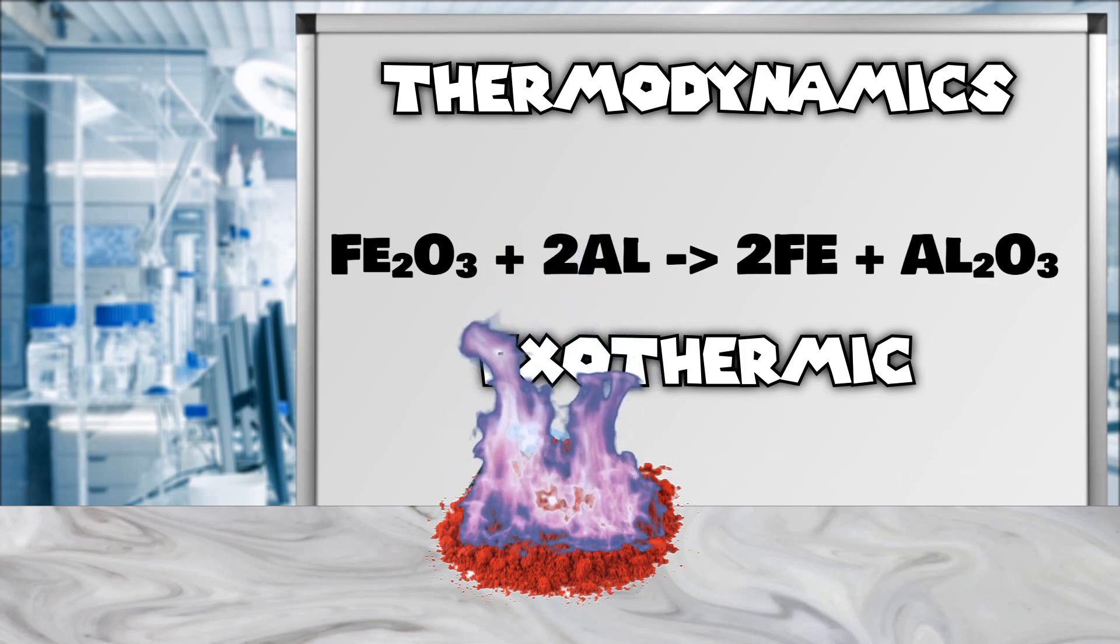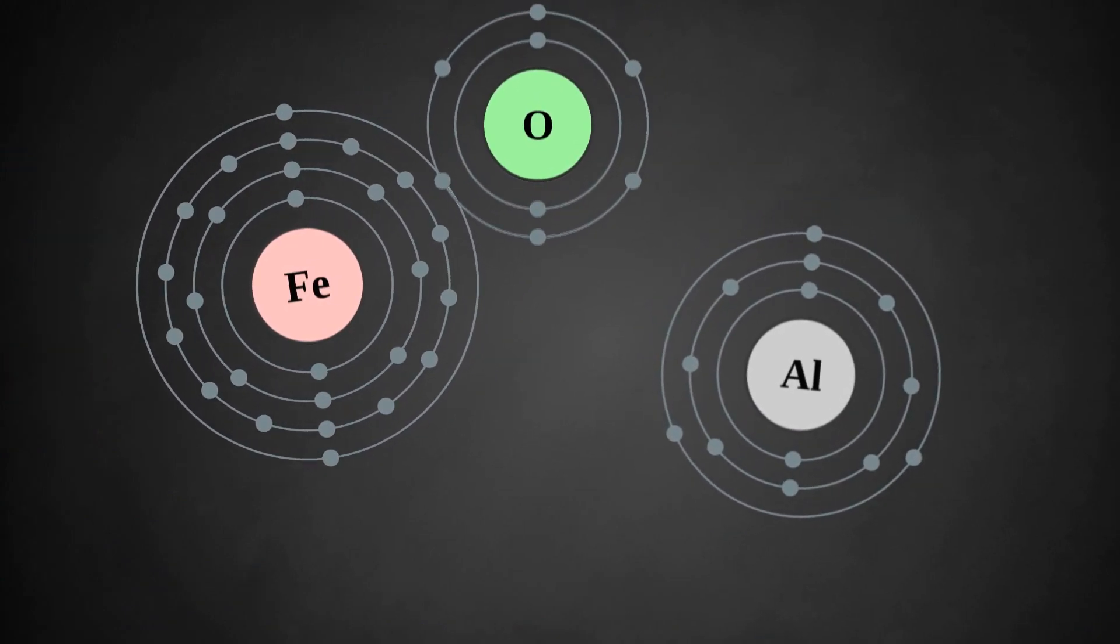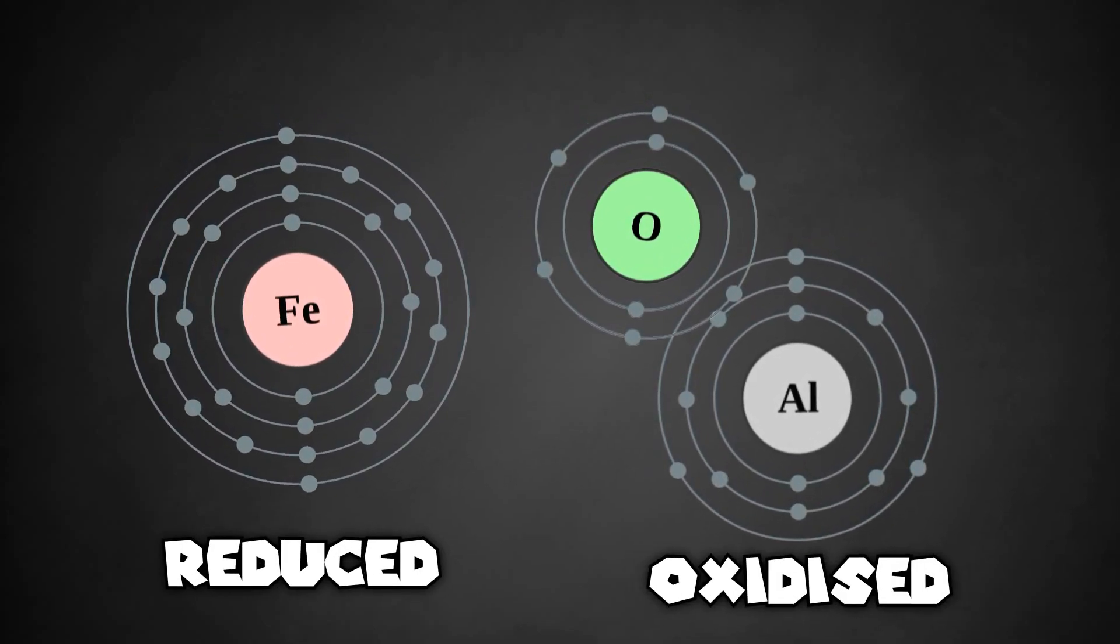And a thermite reaction definitely falls into this category. So the aluminum is able to displace the iron from the iron oxide, removing the oxygen. The iron is reduced and the aluminum is oxidized.